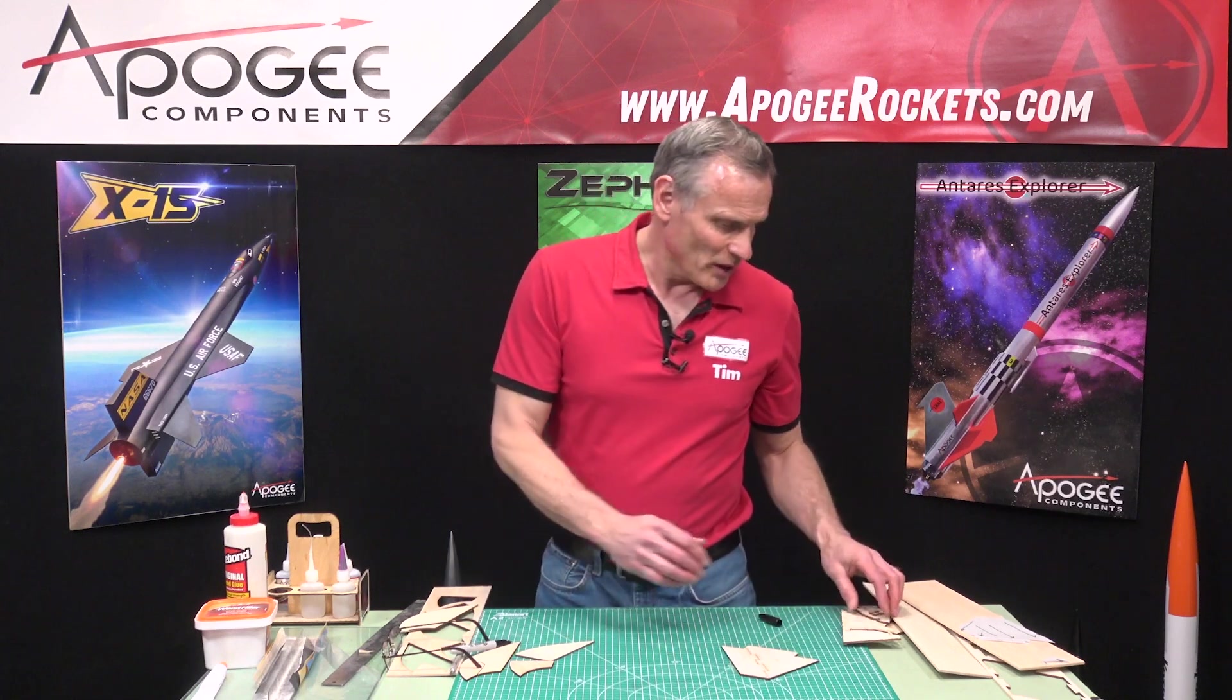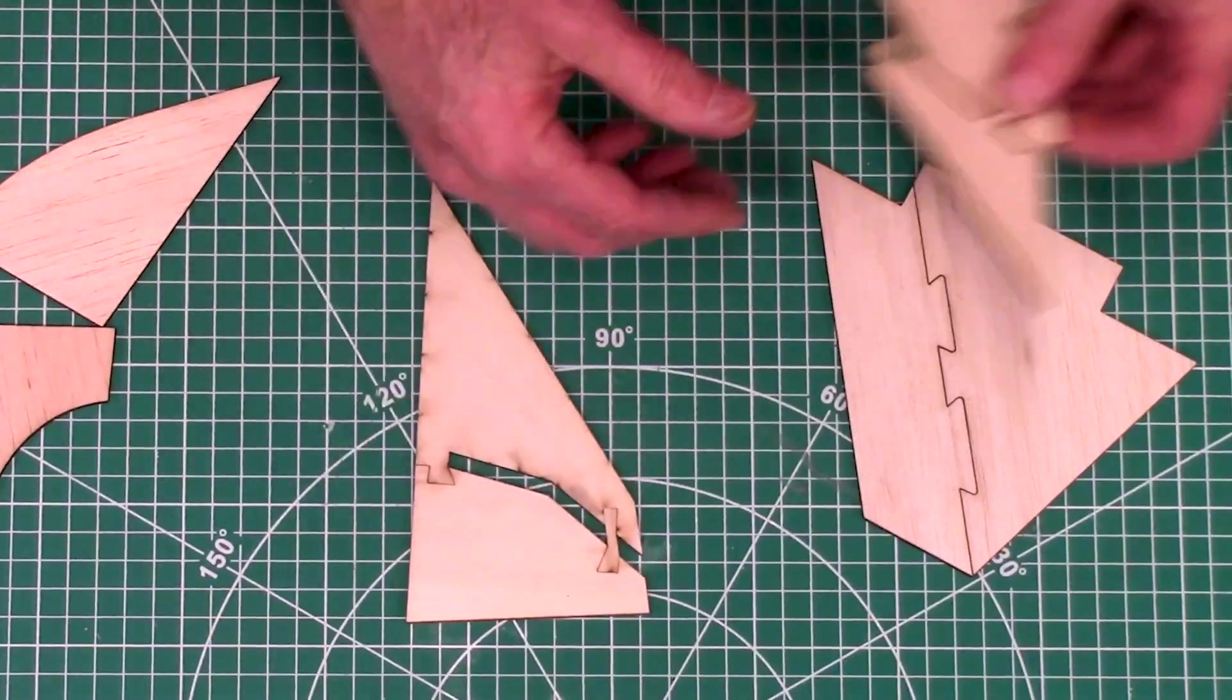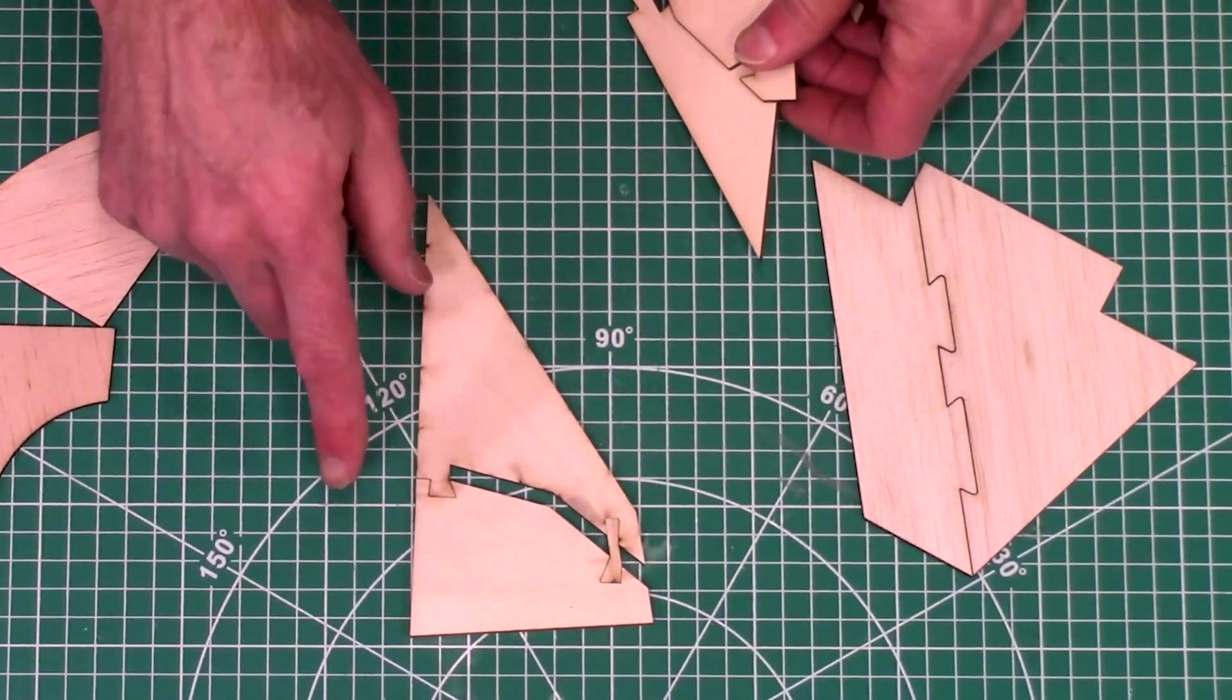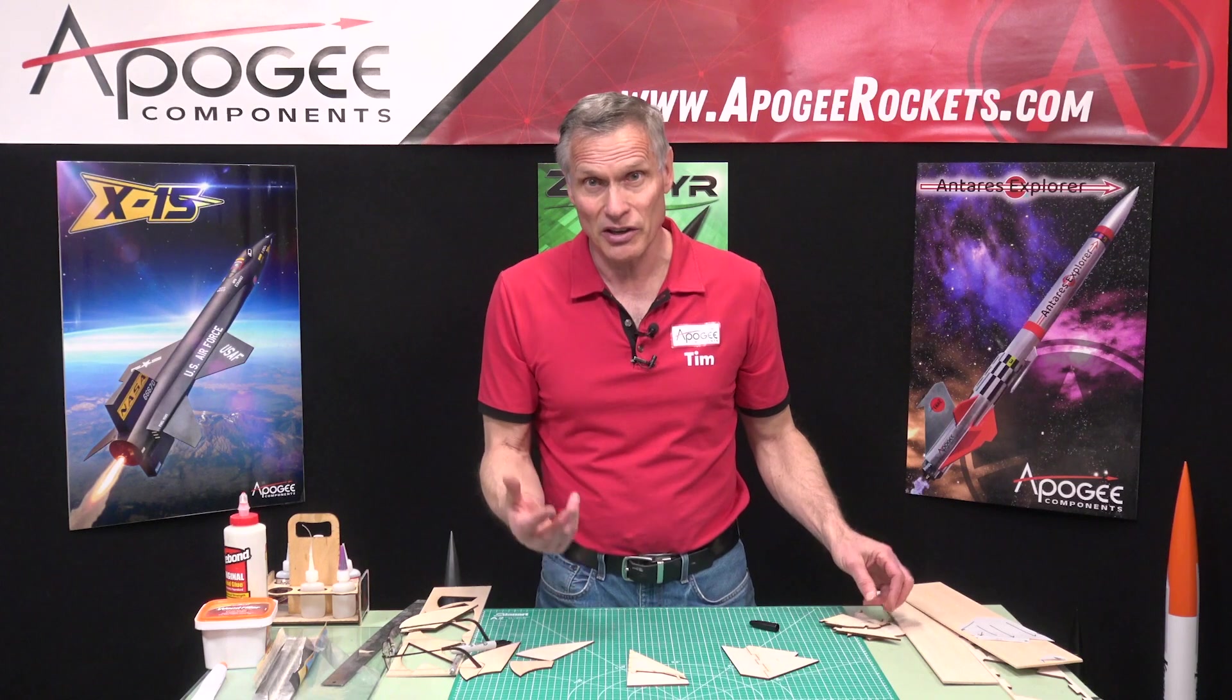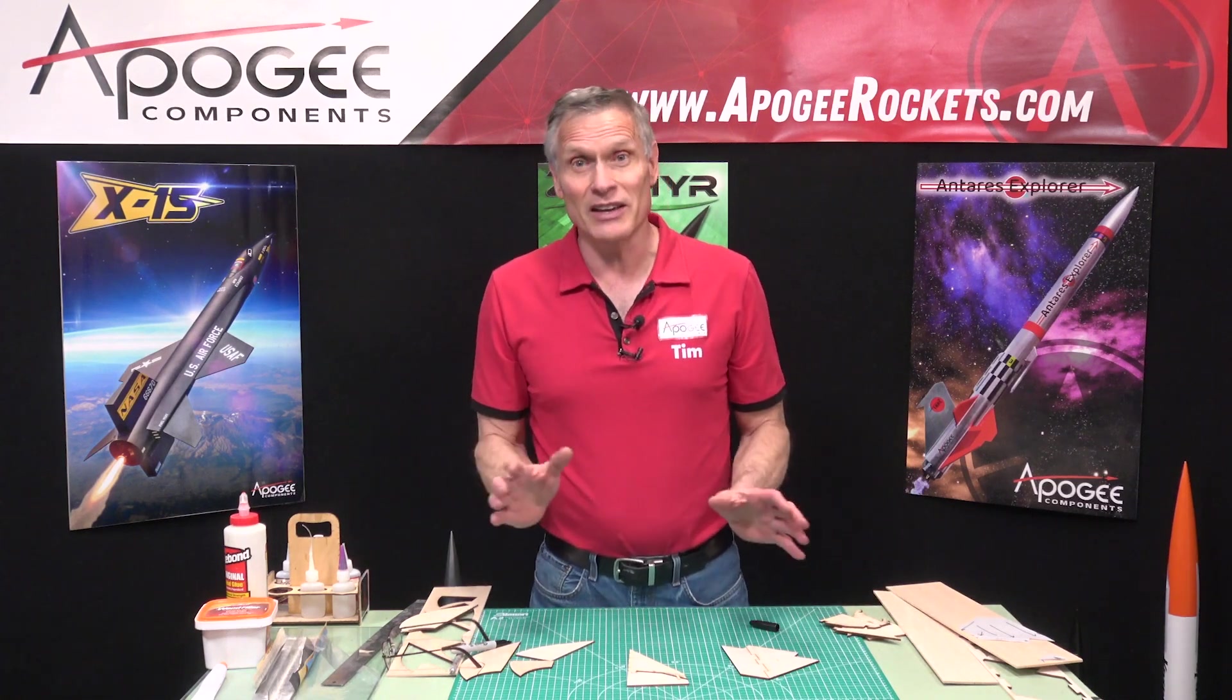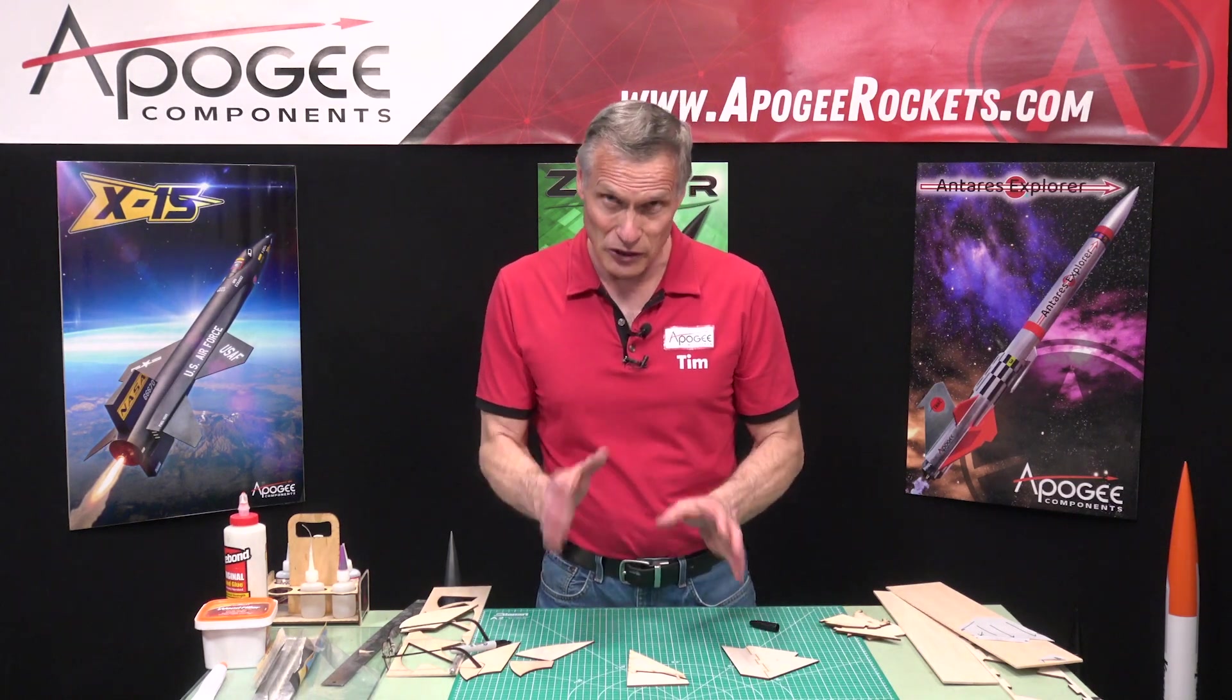So, and then this one right here is the same way. It can only go together one way so that we make sure that our customers can put our rocket kits together. So that is how we design a multiple piece fin.